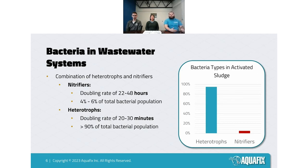The energy-intensive niche of nitrifiers really expresses itself in their reproduction time. Nitrifiers have doubling times of 22 to 48 hours — sometimes even longer. By comparison, general heterotrophs can double in as quickly as 20 to 30 minutes. These are very big swings in numbers.